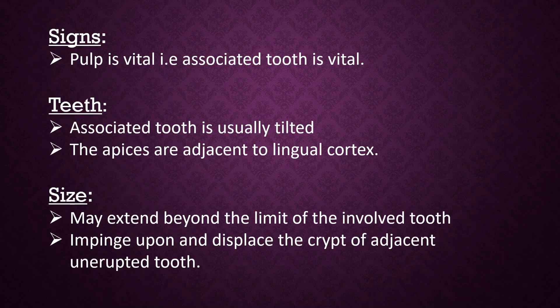Signs: Pulp is vital, that is the associated tooth is vital. The associated tooth is usually tilted. The apices are adjacent to the lingual cortex. The cyst may extend beyond the limit of the involved tooth and impinge upon and displace the crypt of the adjacent unerupted tooth.